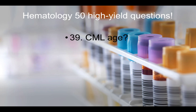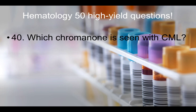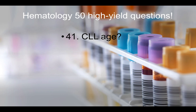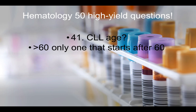Question thirty-nine: CML age group is 30 to 60 years old. We say all kids have ALL; CML is 30 to 60. Question forty: Which chromosome is seen with CML? That would be the Philadelphia chromosome. Question forty-one: CLL age is over 60 — the only leukemia that starts after 60. So ALL = kids, CLL = greater than 60.